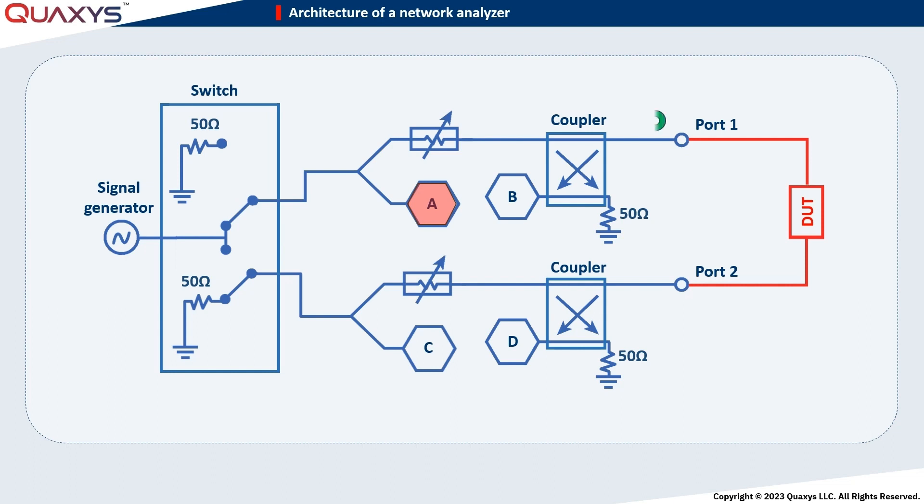The reflected signal from port 1 is coupled by the directional coupler to detector B. As we know, S11 is defined as the ratio of the reflected and incident powers. Therefore, the S11 is proportional to the ratio of the powers detected by B and A.